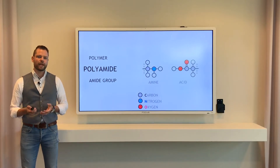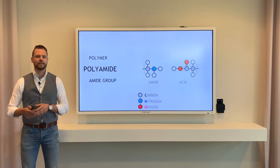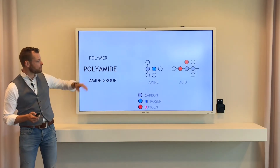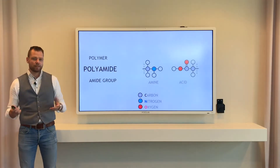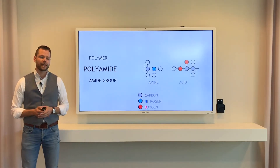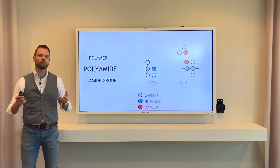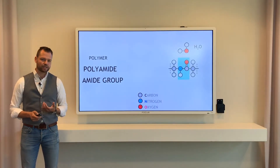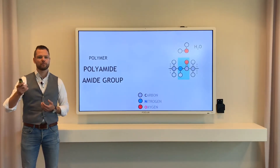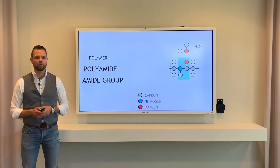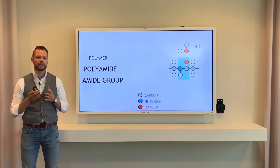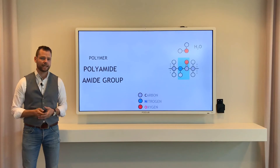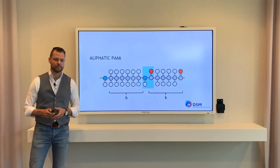For a polyamide you need a diamine and a diacid group, as you can see here. They are going to react with each other in a so-called polycondensation reaction. In that reaction you eliminate water and then you form a very important amide group, which you see in any polyamide.